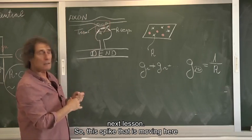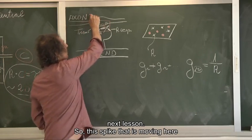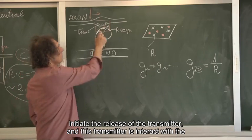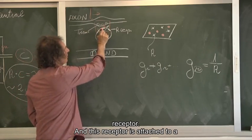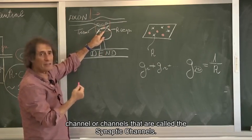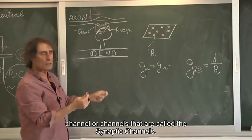We shall discuss the spike in the next lesson. So this spike that is moving here, initiates the release of the transmitter, and this transmitter interacts with the receptor, and this receptor is attached to a channel, or channels, that are called the synaptic channels.